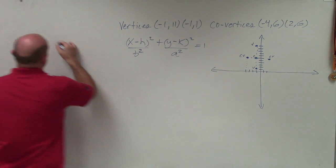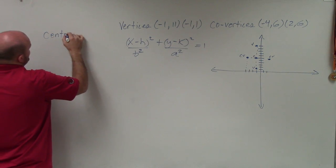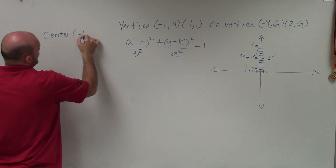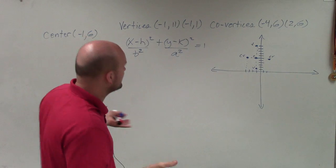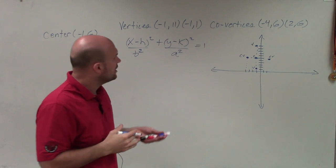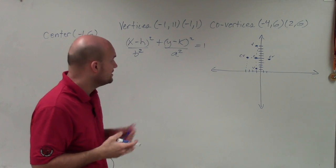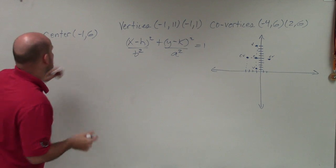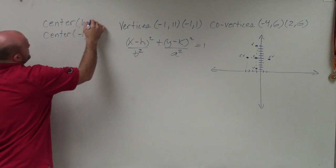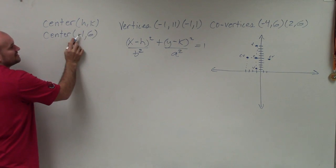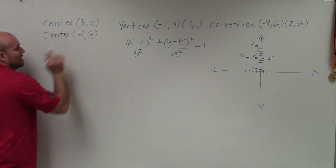So I can see the center is going to be at (-1, 6). Because it's going to be at the intersection of my covertices and vertices. Now, remember the center is always in the form of h comma k. So therefore, my h is -1 and my k is 6.